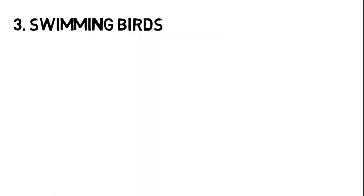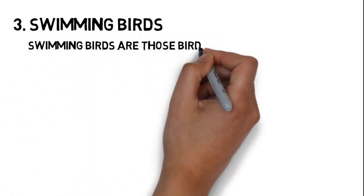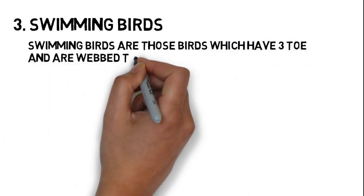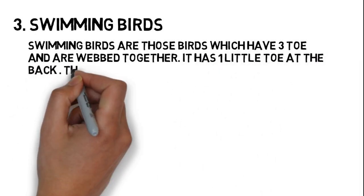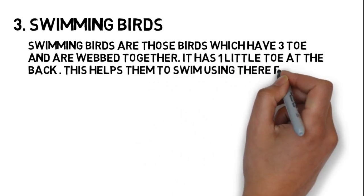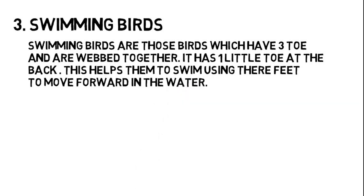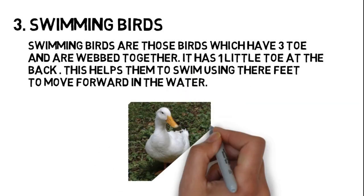Number three, swimming birds. These birds have three toes that are webbed together and one little toe at the back. This helps them swim and move forward in the water. For example, duck and swan.